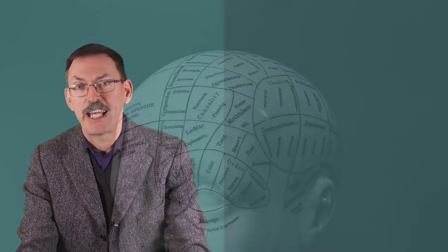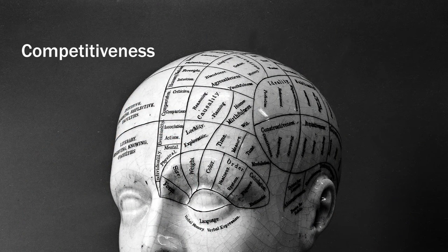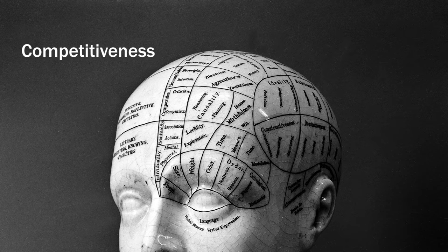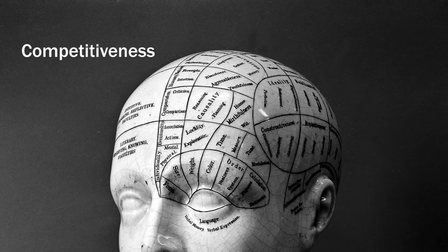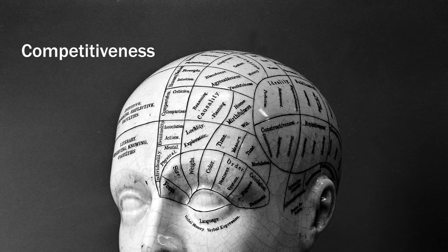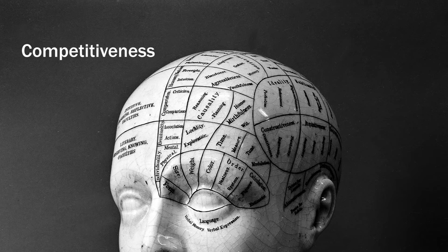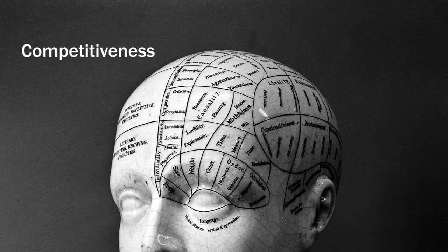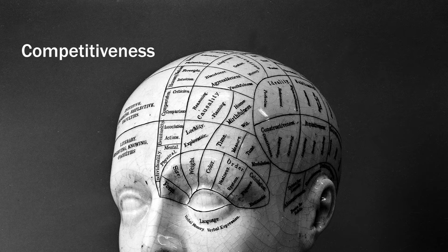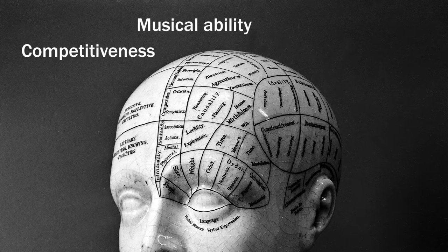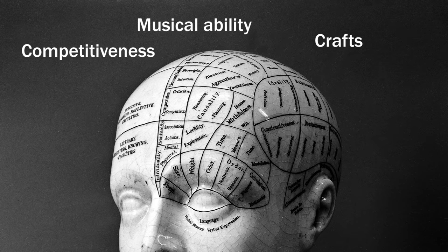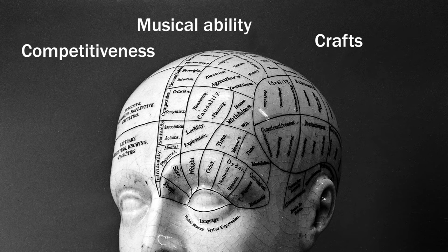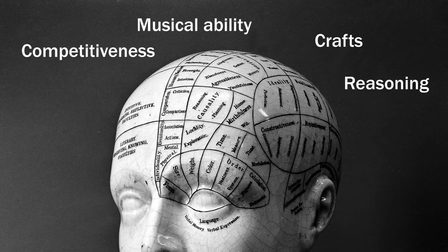So, for example, the phrenologists had faculties for competitiveness. A special faculty they assumed was central in the human mind and was responsible for our ability to judge our own standing in society, how we stand relative to other people. Like the ability to scan whether one's social position is good or bad. That was an altogether new faculty in the minds that the phrenologist assumed. Then they also had faculties for musical abilities. They had faculties for different crafts that people might be able to do. They had faculties for different kinds of reasoning and much else beside.